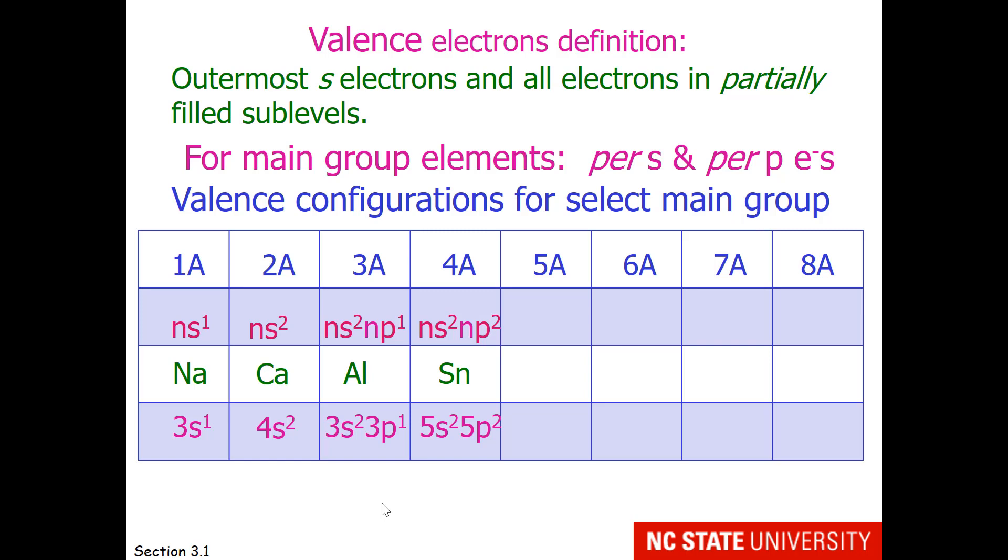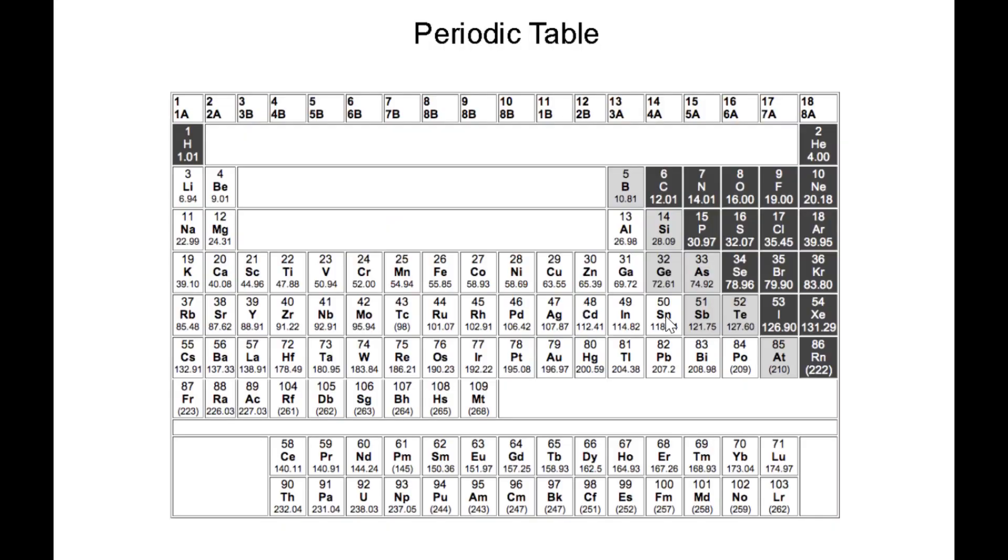Tin would be in the 4a column of the periodic table, and it has four valence electrons, specifically 5s2, 5p2. If I show you tin on the periodic table, you notice that its full electron configuration is krypton, followed by 5s2, 4d10, 5p2. Notice we have left out the 4d10 electrons in the valence electron configuration, because that sublevel is full. So if it's in column 4, like tin, it has 4 valence electrons.